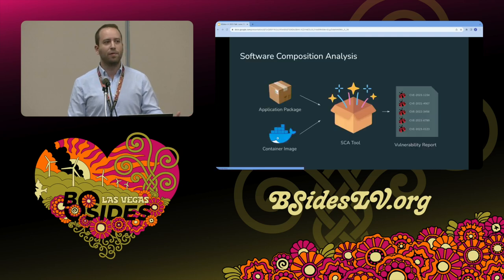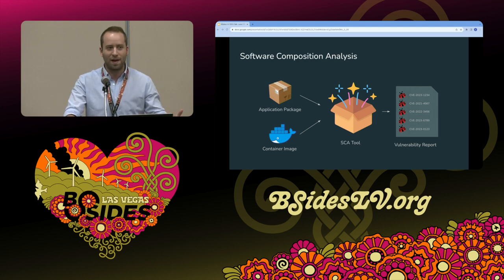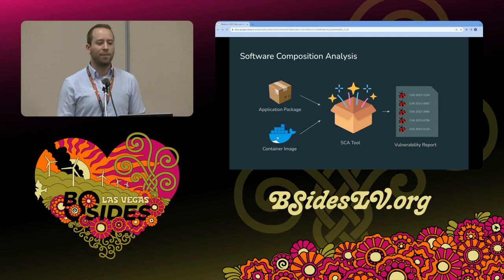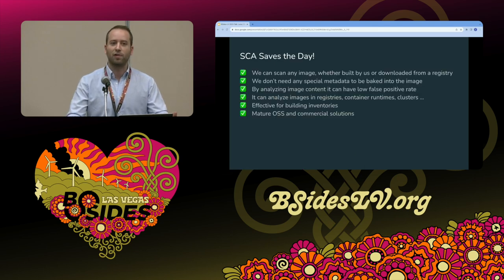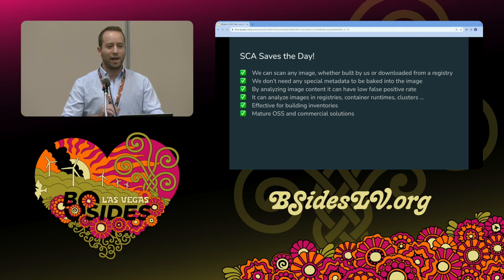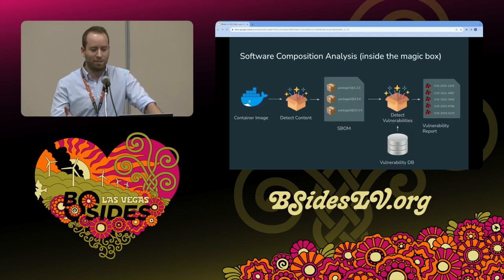Fortunately we have tools — software composition analysis, or vulnerability scanners. We've heard about them, we probably use them. If we think about the container image, you take your container image and shove it into the magic box, and out comes a list of vulnerabilities. This is really useful. When Log4Shell hit, you could use open-source or commercial solutions that are pretty mature — you would just run it on everything in your clusters and that would just work.